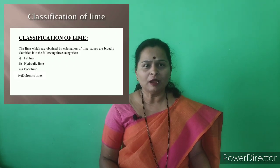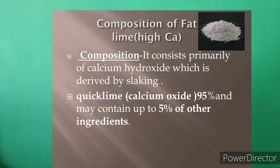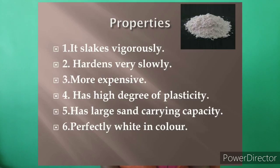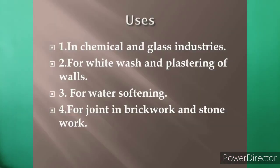Lime is classified into four types: fat lime, poor lime, hydraulic lime, and dolomite lime. Fat lime, also known as high calcium lime, contains calcium hydroxide derived by slaking. Properties: it slakes vigorously, hardens very slowly, is more expensive, has high plasticity, large sand-carrying capacity, and is perfectly white. Uses: glass and chemical industry, white wash, plastering, water softening, and joint work in brick and stone.